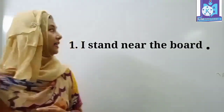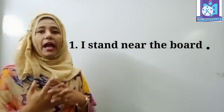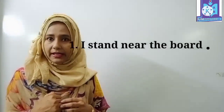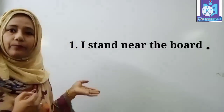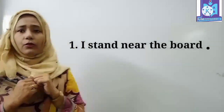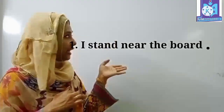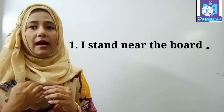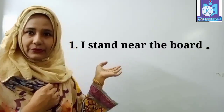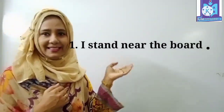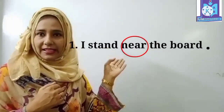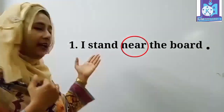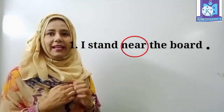In the first sentence, here is telling about the position of me — where am I? I am near the board. So, which word builds the relation between I and the board? Yes, near. This word 'near' builds the relation between me and the board.